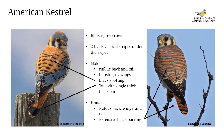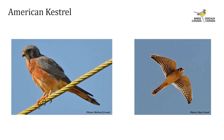The American kestrel is the smallest North American falcon at only 30 cm in length, often referred to as a sparrowhawk. They have a bluish-gray crown and two black vertical stripes under their eyes. Males have a rufous-colored back with bluish-gray wings with black spotting and a rufous tail with one large black bar at the end. Females have a rufous-colored back, wings, and tail with extensive black barring. In flight they show the typical falcon silhouette with long sharply-tipped wings and a long narrow tail.